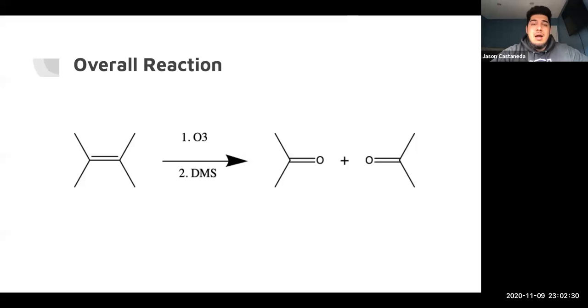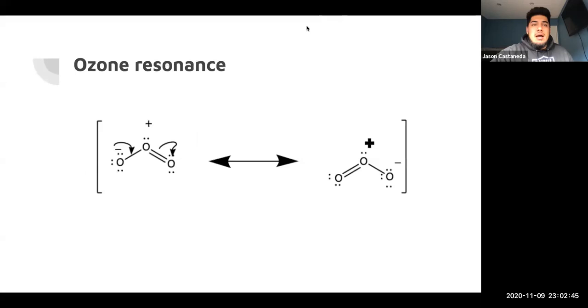So in terms of the overall reaction, on the left we have our generic alkene, and we'll react that alkene with first ozone, which is O3, and DMS, which is dimethyl sulfide. And on the right we have our two products. We have ketone and an aldehyde, depending on the substituents that are connected to it.